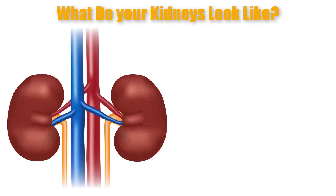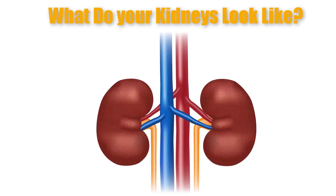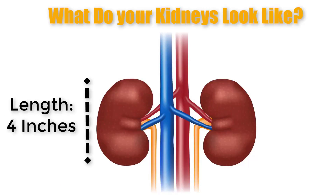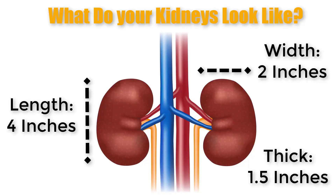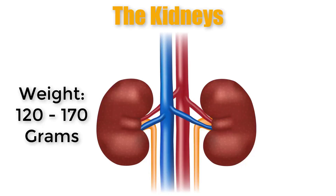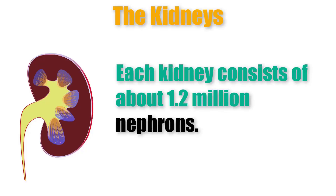The kidneys function independently of each other. They are reddish in color and bean-shaped. Each one measures approximately 4 inches or 10 centimeters in length, 2 inches or 5 centimeters in width, and 1.5 inches or 4 centimeters in thickness. Each kidney weighs about 120 to 170 grams, or roughly one quarter to one third of a pound. The functional units of the kidney are tiny structures called nephrons, and each kidney consists of about 1.2 million nephrons.